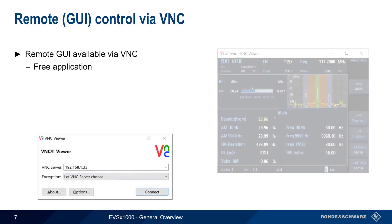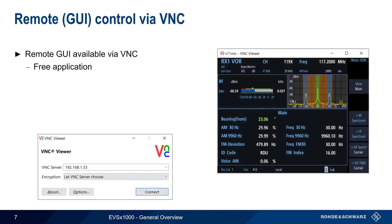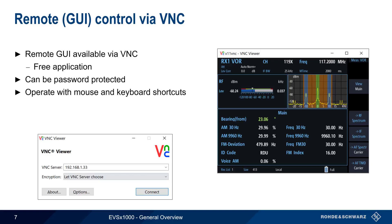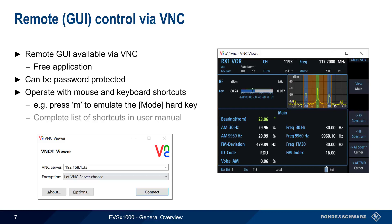Simply enter the EVS1000's IP address in the VNC Viewer or Client application and press Connect. Although no password is required by default, remote access can be password protected. The remote GUI is operated using a mouse to select graphical elements and keyboard shortcuts to emulate hard keys. For example, pressing M has the same effect as pressing the Mode hard key. A complete list of these shortcuts can be found in the user manual.